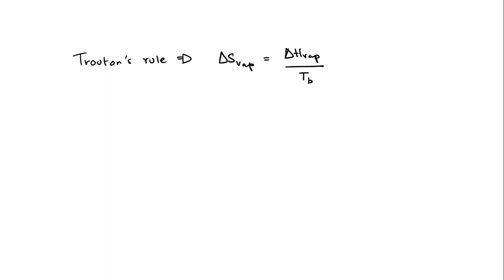This particular equation can also be applied to vaporization. The change in entropy when a substance vaporizes is going to be equal to the change in enthalpy when it vaporizes — the delta H of vaporization — over the temperature that it vaporizes at, which is basically the boiling point of that substance.